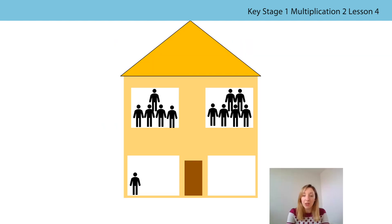Mrs. Waldron showed you this house with people in it, and the people have been grouped, but the groups are unequal at the moment, aren't they? We can see that they are unequal because there are a different number of people in each of the groups. Mrs. Waldron asked you: could you move the people to make the groups equal? How did you get on? Shall we have a little look and see if we can move the people to make the groups equal?